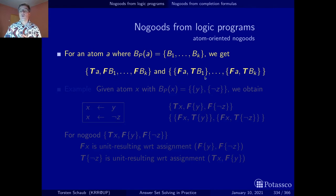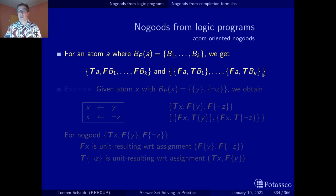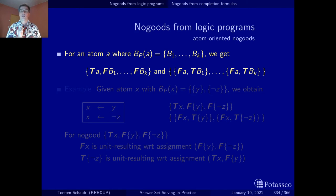The other no-goods say it can't be the case that the atom is false, but one rule that has this atom in the head is actually applicable because its body is true — and there are k of them. This is the abstract way we get no-goods from the atom-oriented completion formula.